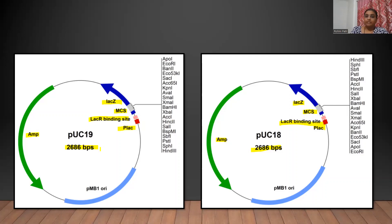Both of these plasmids are derived from the vector pBR322. From pBR322, pUC-18 and pUC-19 inherited the ampicillin-resistant gene and the origin of replication, which is the pMB1 origin of replication.